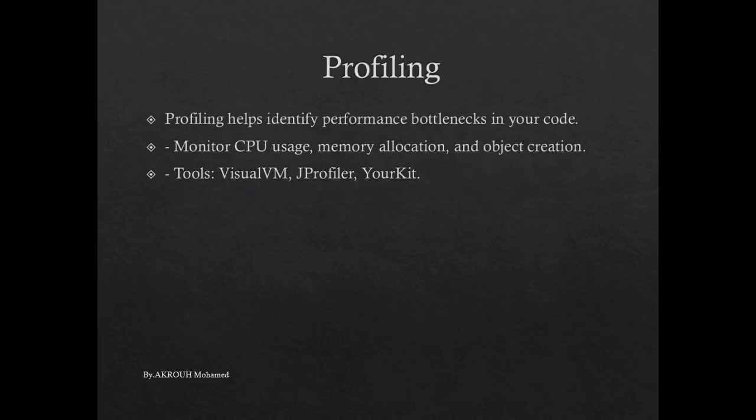Now let's move on to profiling, which is a critical process for identifying performance bottlenecks in your code. Profilers such as VisualVM, JProfiler, and YourKit allow you to monitor CPU usage, memory allocation, and object creation patterns in real time. These tools help you discover hotspots in your code — areas that consume the most resources — allowing you to optimize these critical paths to improve overall performance.